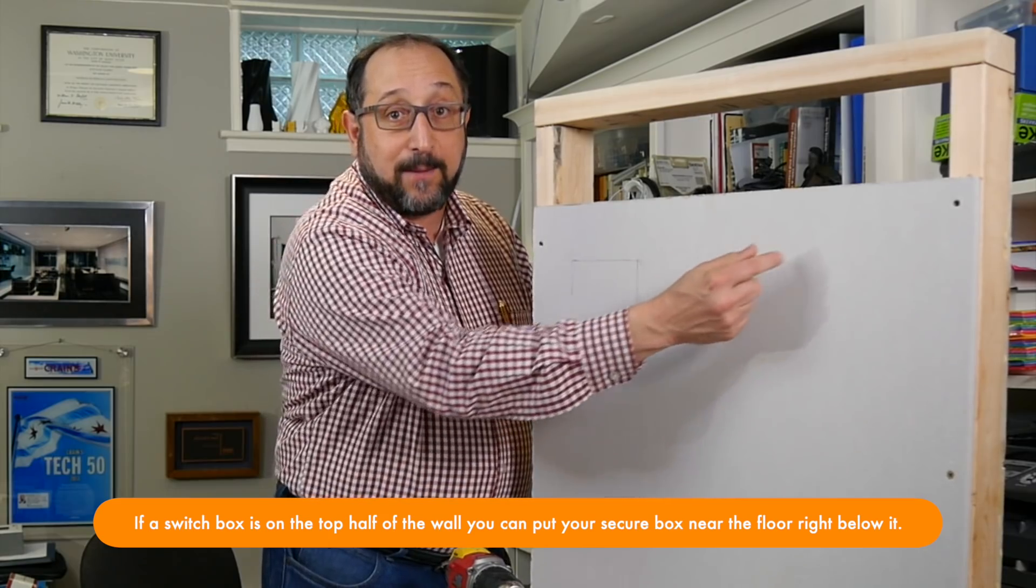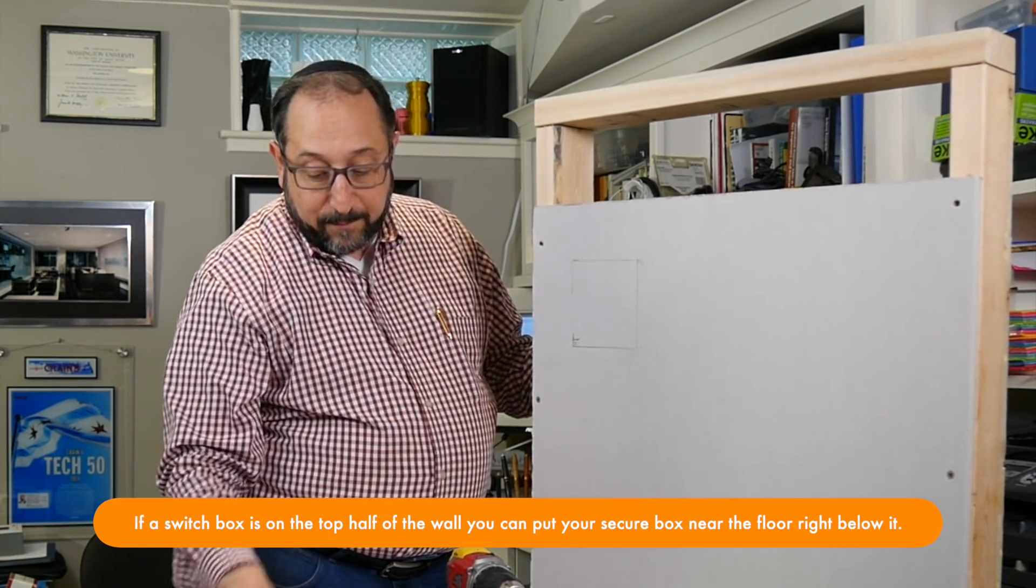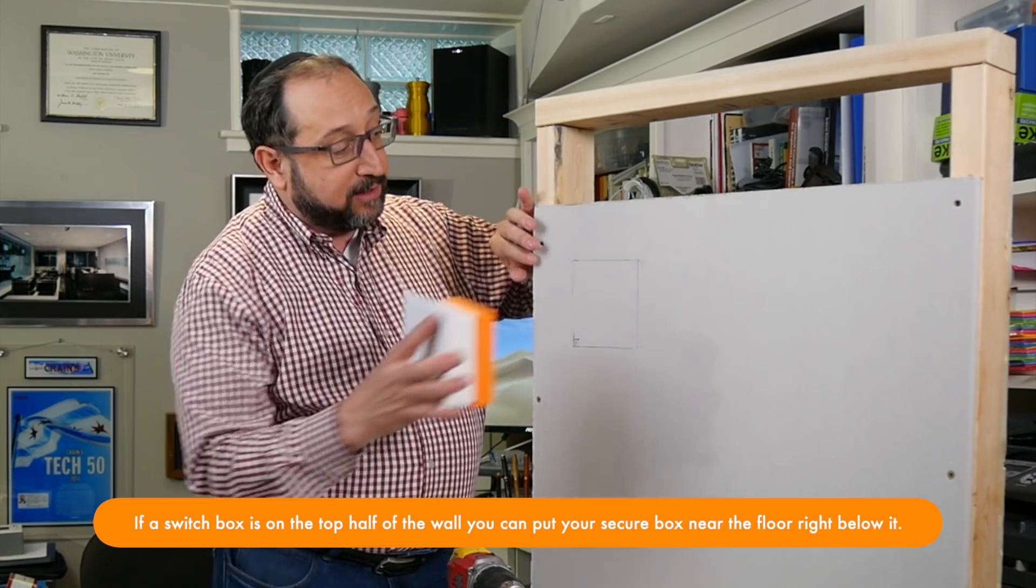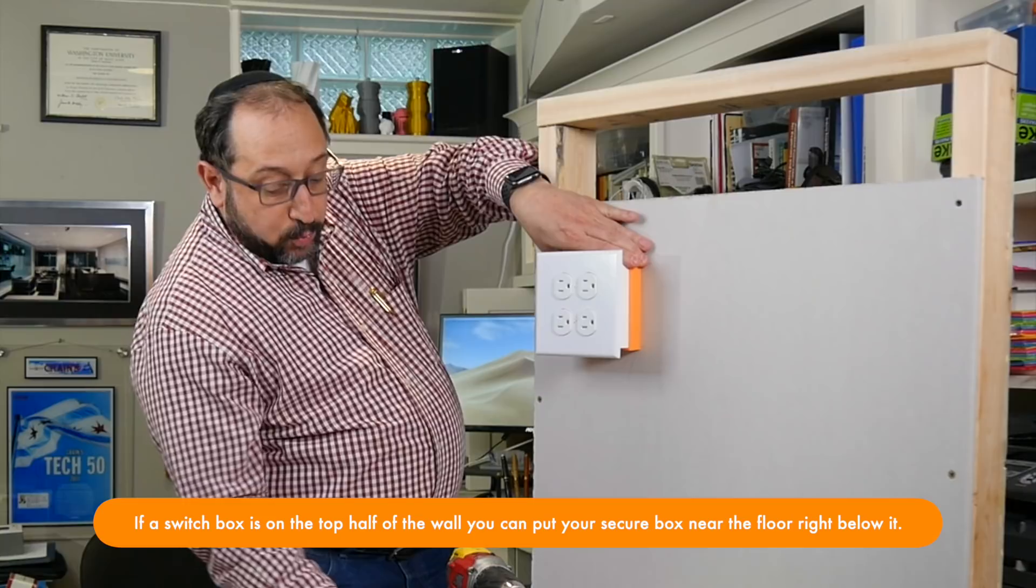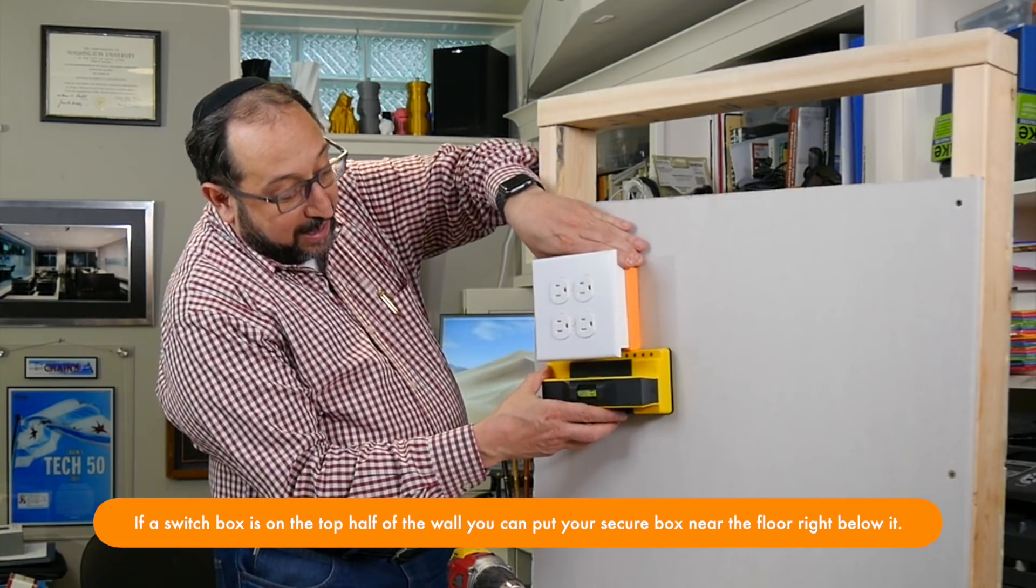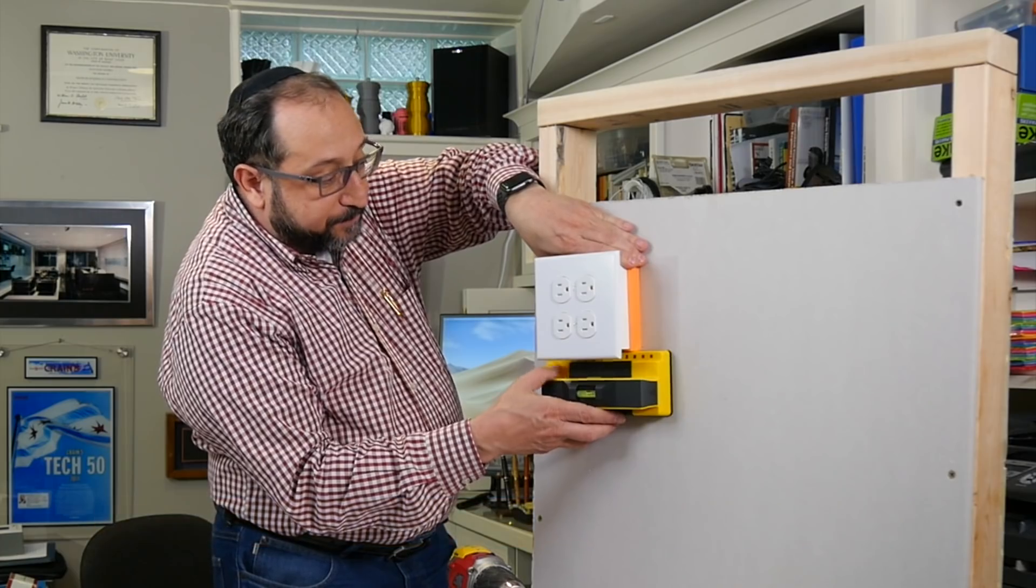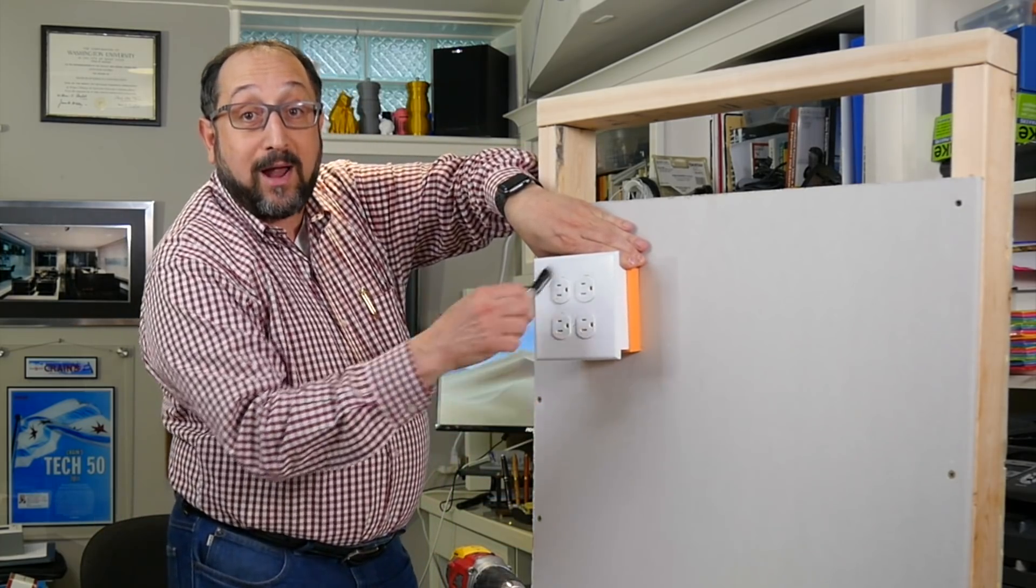Then in the United States as an example, you could mark 16 inches. So we're going to put our box right here. I have this already marked, but basically what you have to do is just put your box where you want it, make sure it's level—there happens to be a level on this stud finder—and then use a sharpie to draw a line around it.